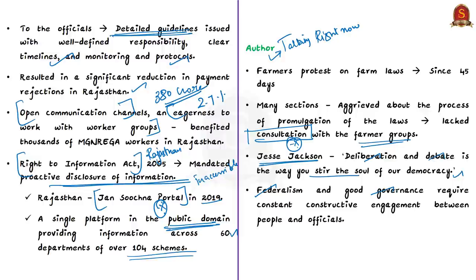If a government is committed to constitutional principles, then paying attention to multiple points of view and listening to the voice of the marginalized becomes a prerequisite. The author quotes Rajasthan's example because he feels the way out of the farmer crisis can be resolved by following it. Hence, he has rightly titled the article as 'Dialogues for Democracy: Lessons from Rajasthan.'